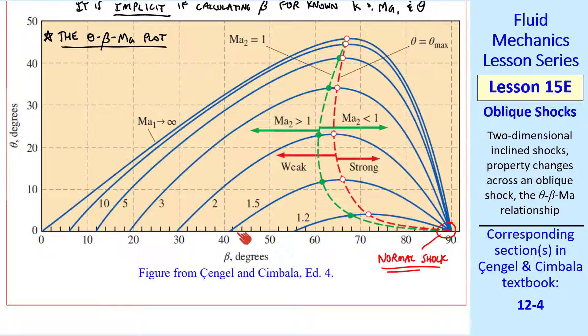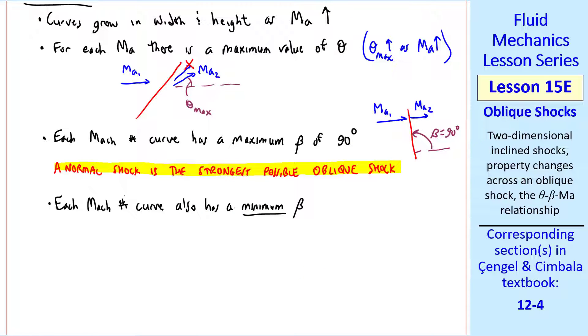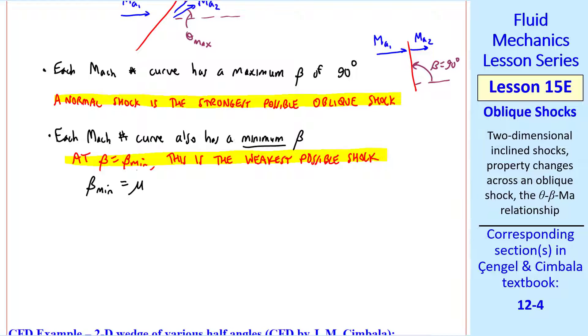There's also a minimum beta for every Mach number, and that beta keeps getting smaller with increasing Mach number, and in the limit when Mach number 1 is infinity, it finally goes to zero. Beta min decreases as Mach number increases. We see that at Mach number 2, for example, the minimum beta is about 30 degrees. It's impossible to have an oblique shock with an angle of 25 degrees, for example, at a Mach number of 2. This is the minimum possible beta for this Mach number. So my comment is that each Mach number curve also has a minimum beta. At beta equal beta min, this is the weakest possible shock. It turns out that beta min equal mu, which we call the Mach angle. Don't confuse this mu with viscosity. It's an angle. It's the angle of a Mach wave, which is the weakest possible shock.